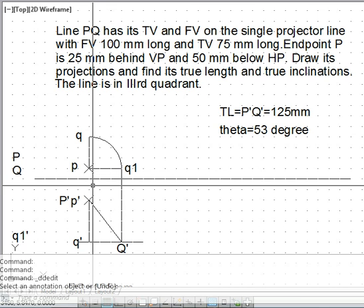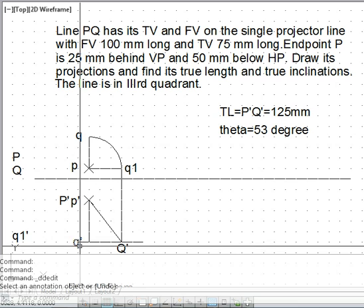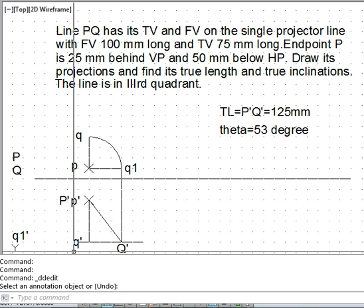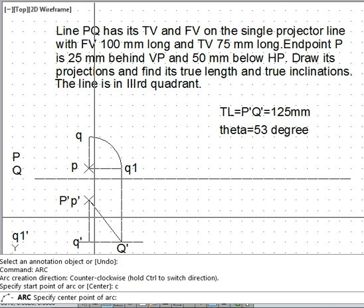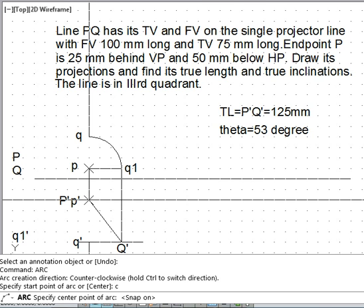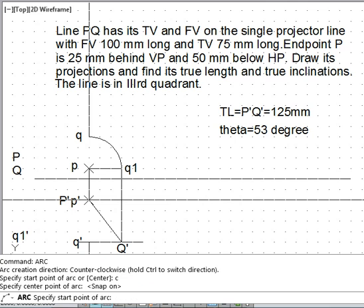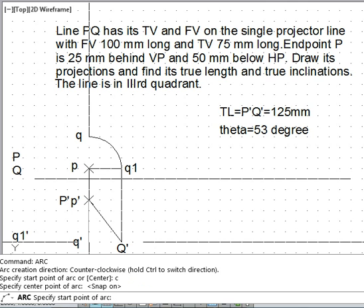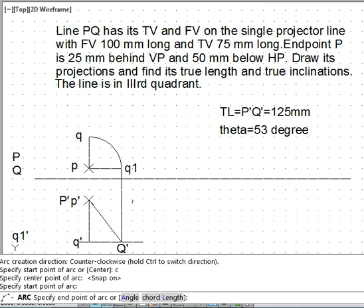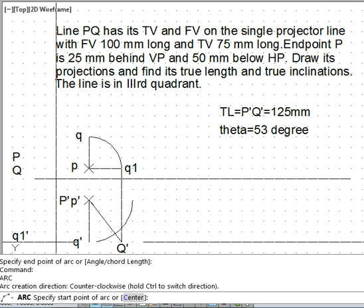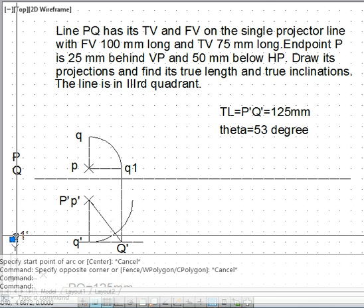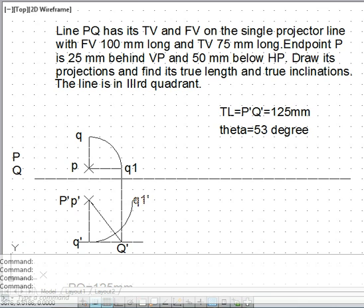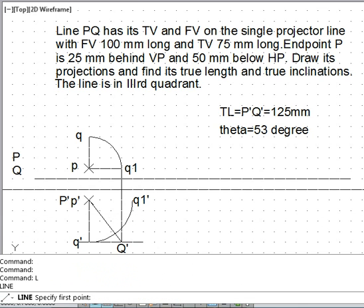Now the angle with VP we get in the top view, so for that we will need to draw the arc with center option at p. So we again make use of snap on, center point, and the starting point is q dash and the end point is here. So this point is actually the q1 dash.